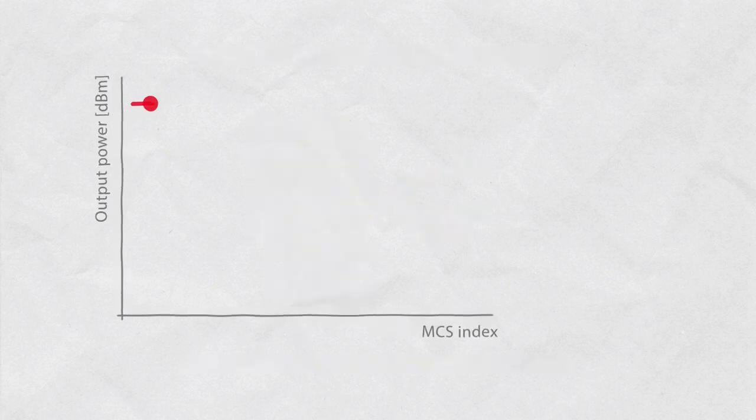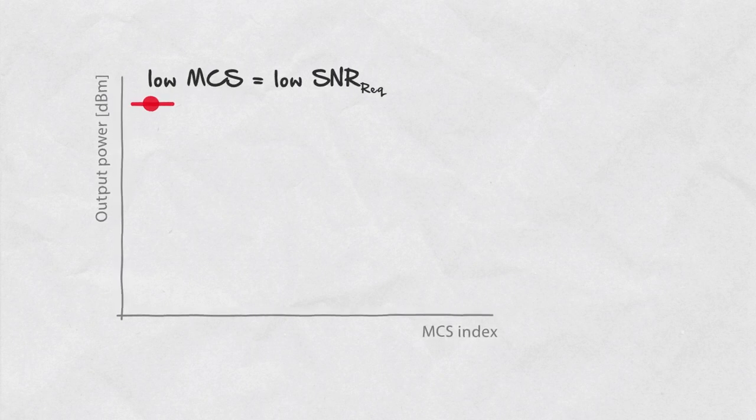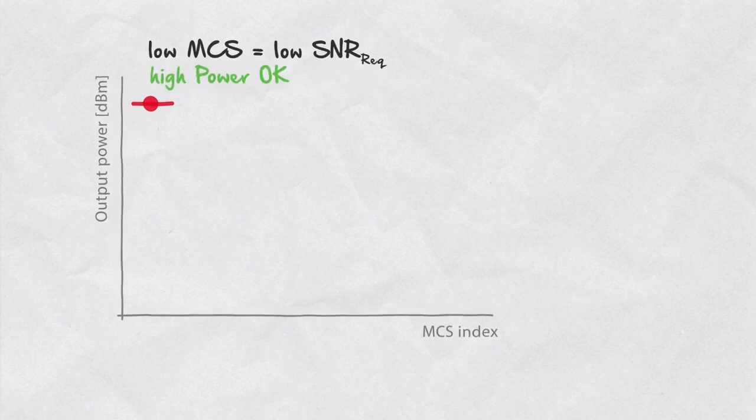Because low MCS rates can work with lower SNR, the added noise due to the amplifier non-linearity is not fatal to the successful data transfer so the output power can be high.